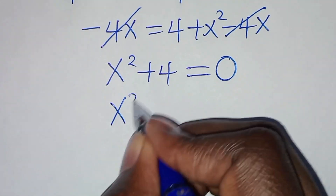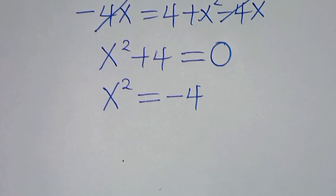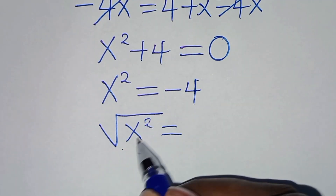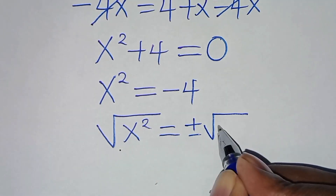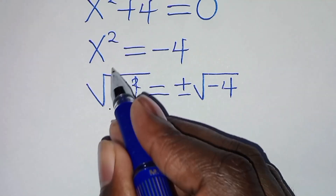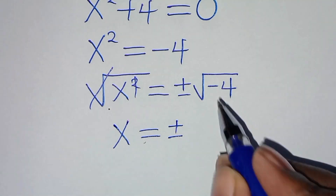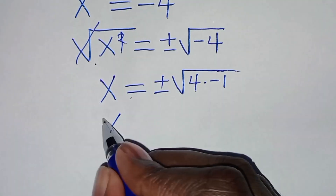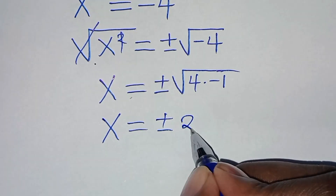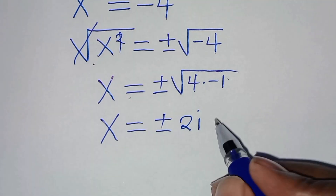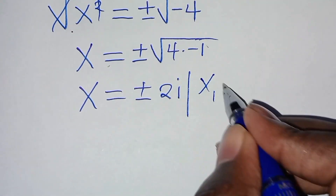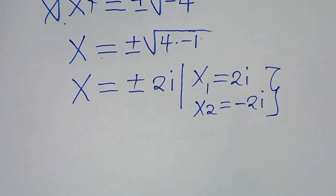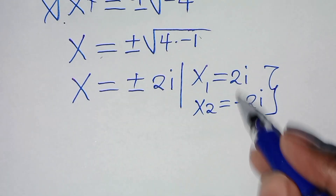So minus 4x simplifies on both sides, so that here we have x squared plus 4, which is equal to 0. This implies that x squared is equal to minus 4. To solve for x, let's introduce a square root sign on both sides. So here we have square root of x squared is equal to plus or minus the square root of minus 4. So x is equal to plus or minus square root of minus 4, which can be expressed as 4 times minus 1. So x equals plus or minus the square root of 4 times square root of minus 1, which is 2i. Therefore x1 is equal to 2i and x2 is equal to minus 2i. These are the values of x as the solutions for this algebra problem.